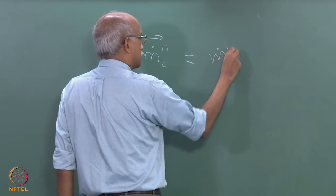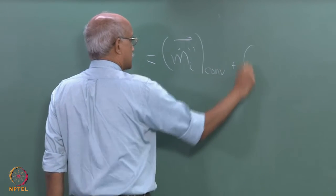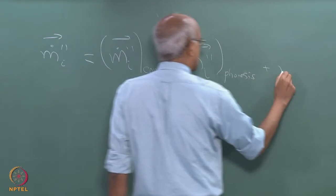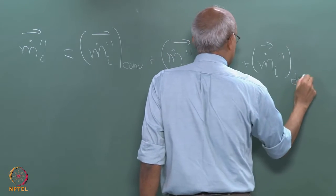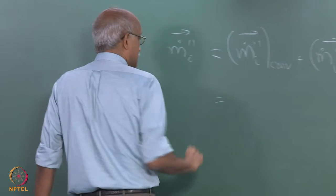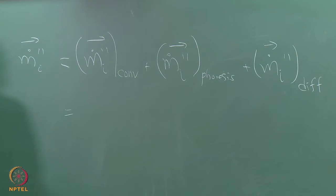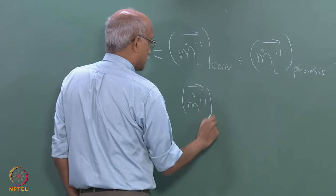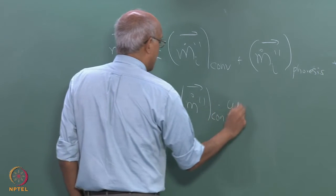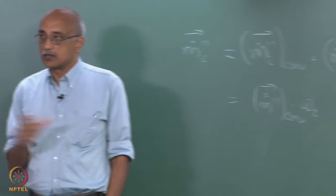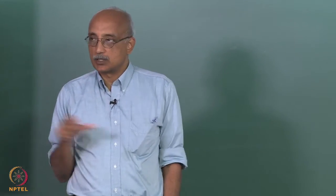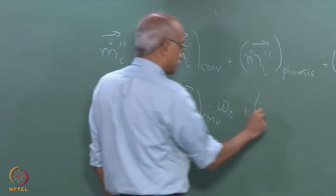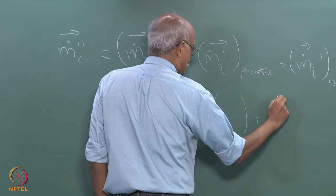Therefore the total flux of species i, written as m_i dot double prime, can be written as m_i dot double prime convection plus m_i dot double prime phoresis plus m_i dot double prime diffusion. The dot represents per unit time and the double prime represents per unit area, so this is a flux term.